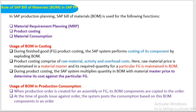The role of SAP bill of materials — BOM is used in many aspects. Three key uses are: Material Requirements Planning (MRP), Product Costing, and Material Consumption. In the PP module, BOM is linked with product costing, is one of the master data, and is definitely helpful in MRP planning, product costing, and material consumption.